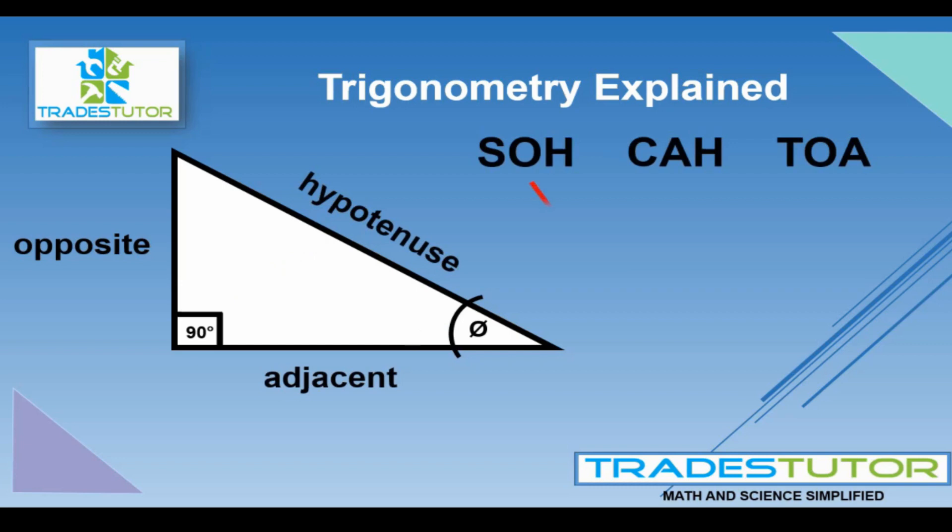So for instance, the first function, SOH, is called the sine function. And what the sine function is, is a relationship between the opposite side and the hypotenuse side. So if you find those two sides, or if you know those two, you can then find the actual angle that separates the two of them. So that's the first one.